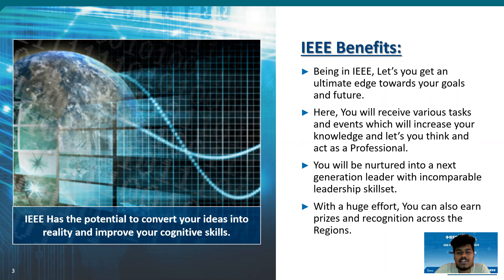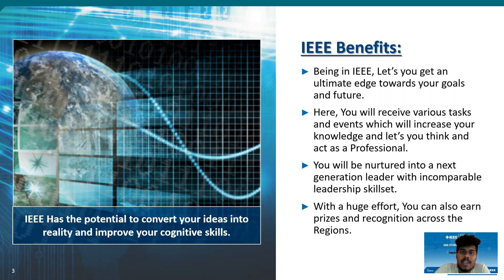IEEE has the potential to convert your ideas into reality and improve your cognitive skills — which is thinking, observing, seeing, implementing, procuring, and so on. Being an IEEE member lets you get an ultimate edge towards your future goals. You need to accept who you are and what you can do, and then move towards activities that can improve our society and our future. Here you will also receive various tasks and events which will increase your knowledge and let you think as a professional.